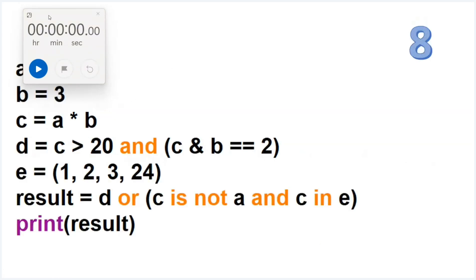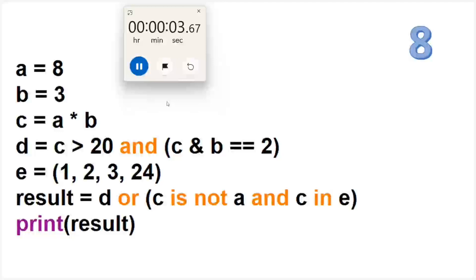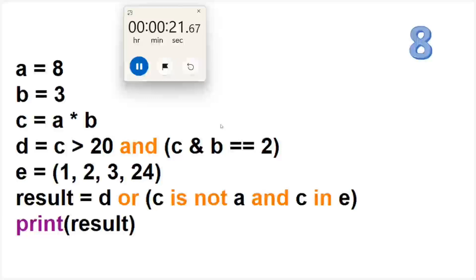The eighth question is a little big and it is a combination of all the operators. Your time starts now. It is a combination of arithmetic, relational — double equal to means relational again — we have a tuple, 'is not', 'in' is also there, so it is like a mixture of all the operators.